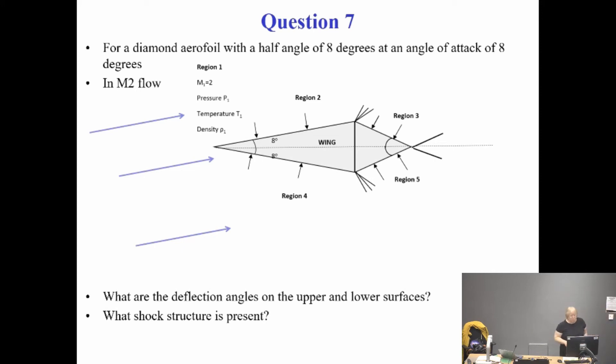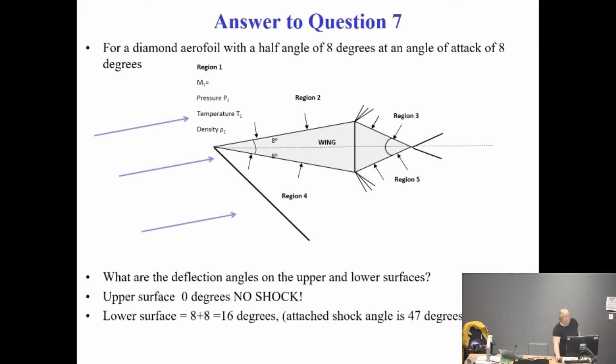The important one is the shock structure. How many shocks now do I have? Do I have two or do I have one? Usually, the previous example, I have two. What have I got there? One. Why? Horizontal flow comes along and at the top surface it doesn't encounter anything. It's horizontal. Therefore there's nothing there. Bottom surface now is acting at 16 degrees, so there's definitely shockwave there. Well done.